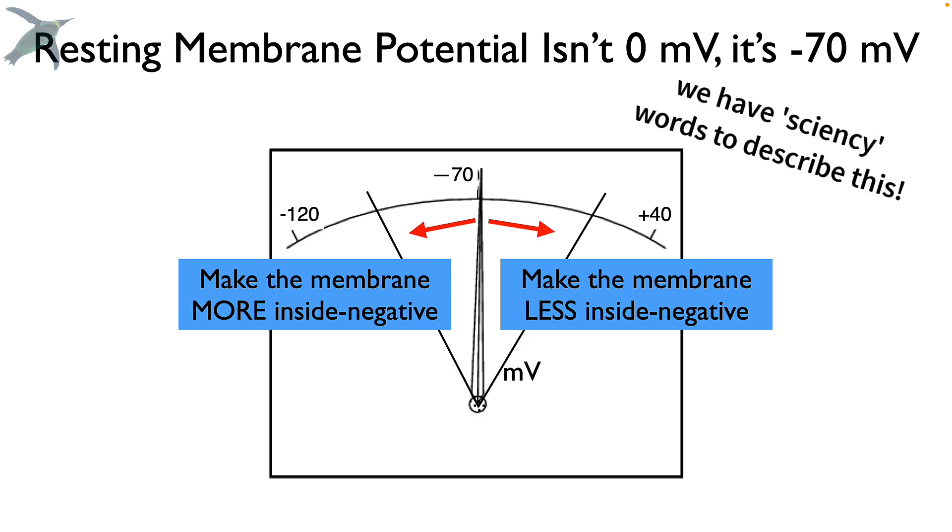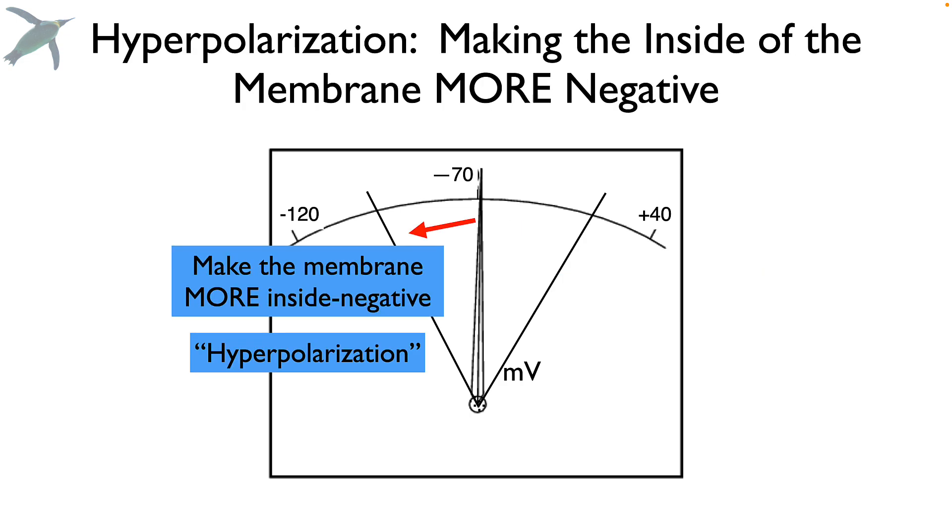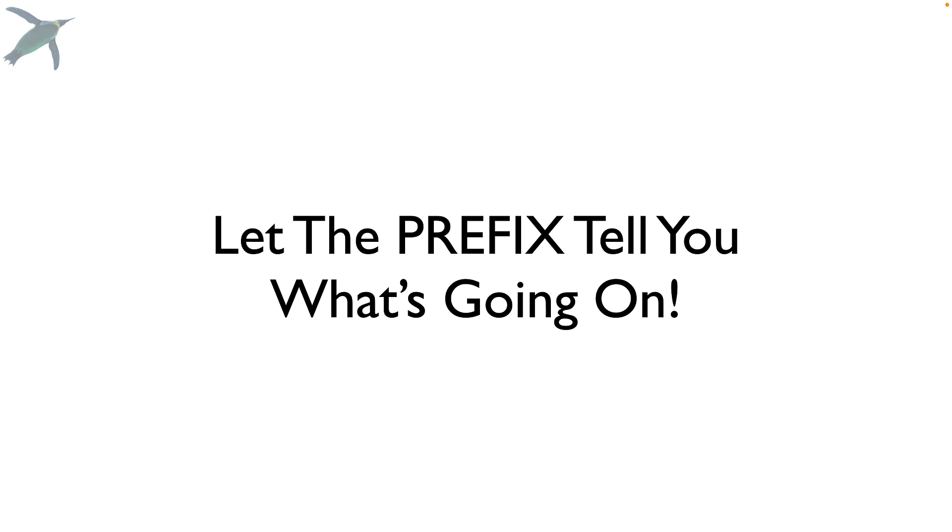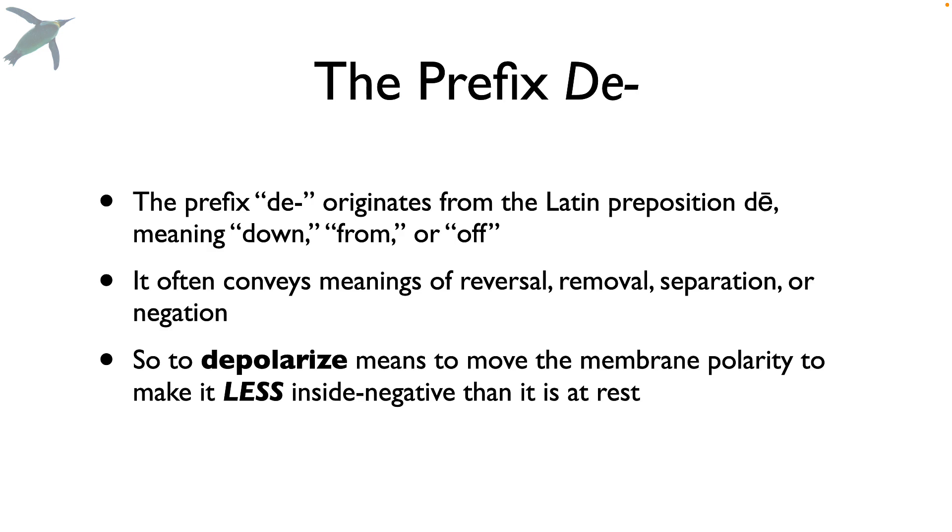so we have science-y words to describe it. When the membrane becomes less inside negative, we call that depolarization. And when the membrane becomes more inside negative, we call that hyperpolarization. Those are the only two options. The prefix tells you what's going on. D means down or off. It conveys reversal, removal, or negation. So, if you think about it, to depolarize just means to move the membrane polarity to make it less inside negative than it is at rest.